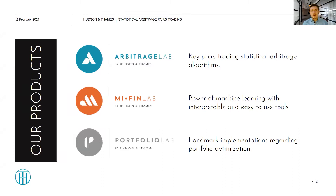We are a software company, and what we do is build Python packages for quantitative finance. Currently, our products are all Python packages: ArbitrageLib, MLFinLab, and PortfolioLab. The two last ones, MLFinLab and PortfolioLab, are free to use — you can easily install them right now by doing pip install. ArbitrageLib is paid on a monthly basis, and you can find out more on our webpage.